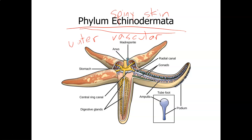The water vascular system works as follows: water enters through a small stone-like structure with pores, then enters the stone canal, then the ring canal, then the radial canal, and from the radial canal, water enters into the tube feet along the arms. When the tube feet fill with water, it acts almost like a skeleton and enables the sea star to move across the surface. Every arm has digestive glands, and you can also find gonads in the arms or rays.